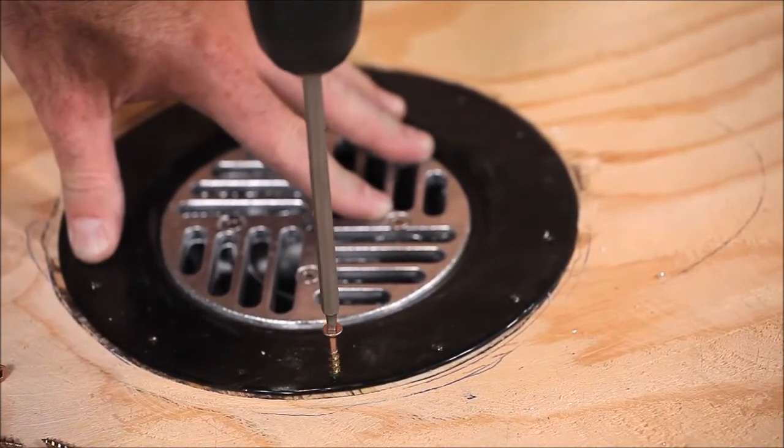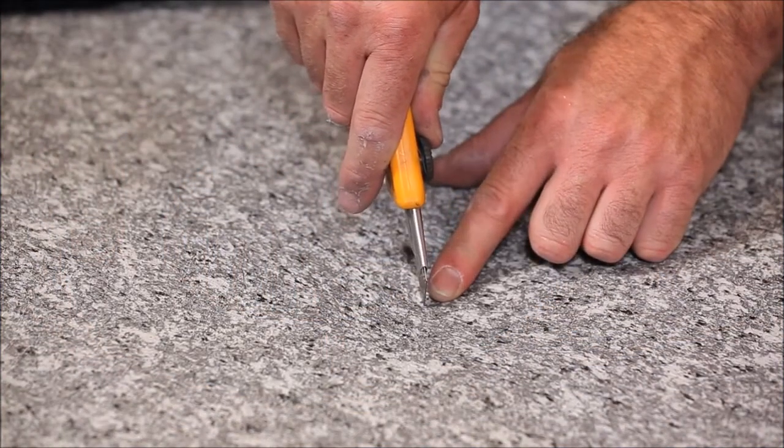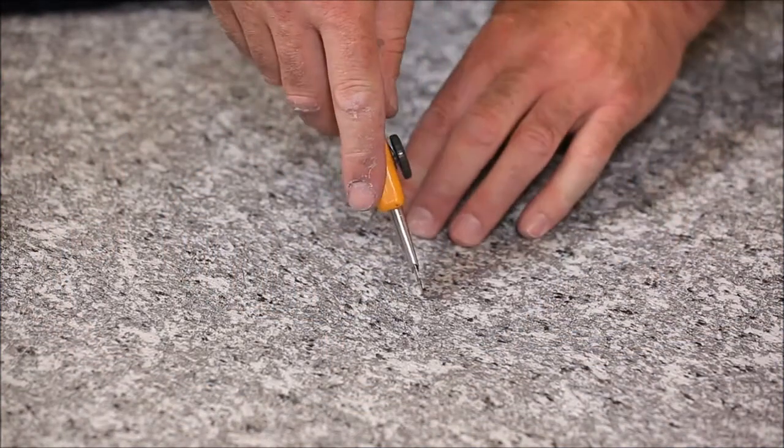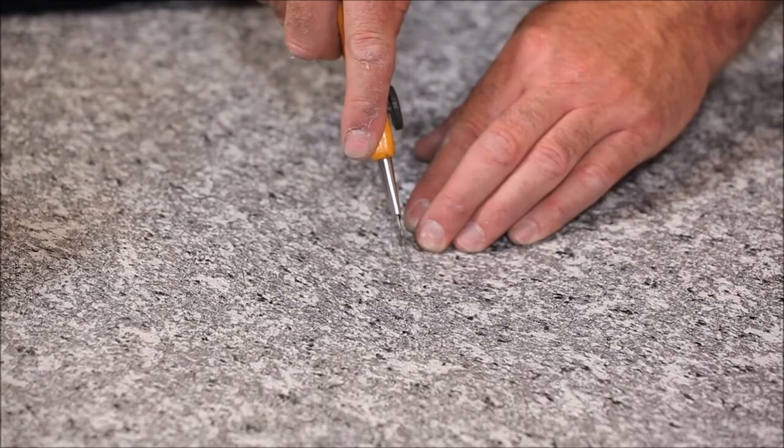Apply the vinyl to the deck surface as usual, bringing the adhesive just up to the edge of the drain flange. Now, find the center of the drain and cut a hole through the vinyl at this spot with your knife.